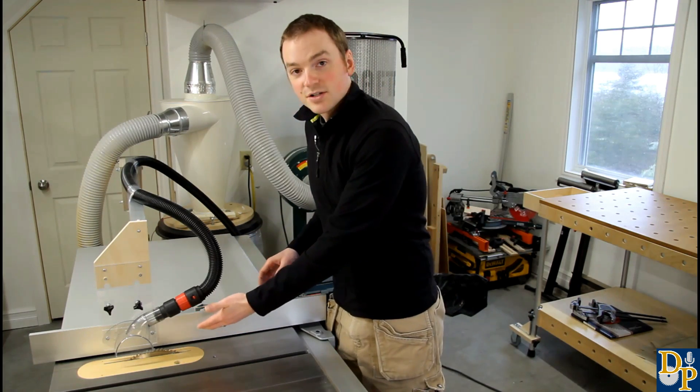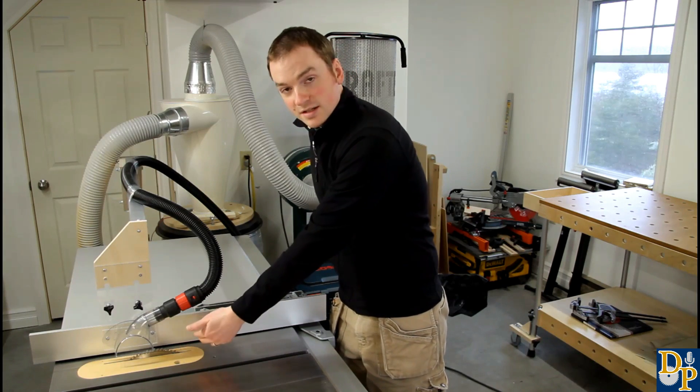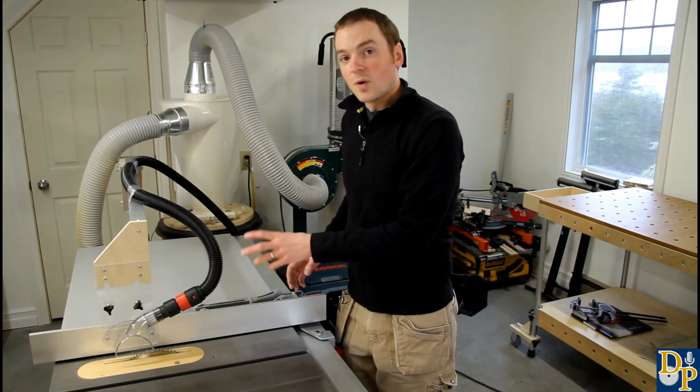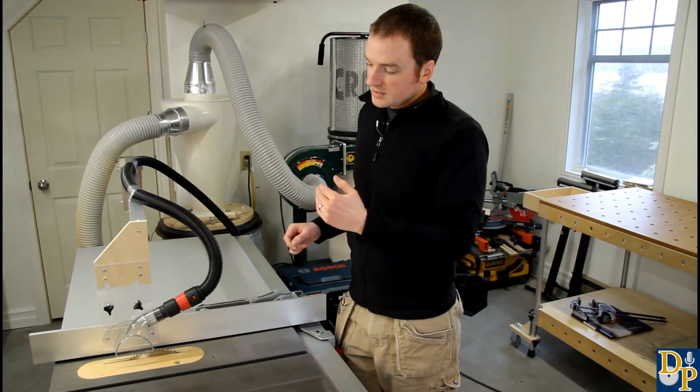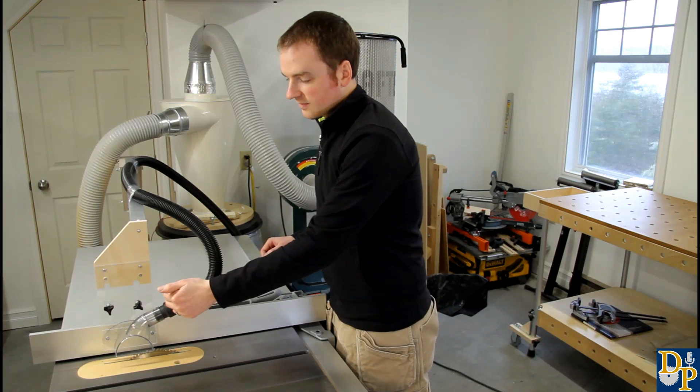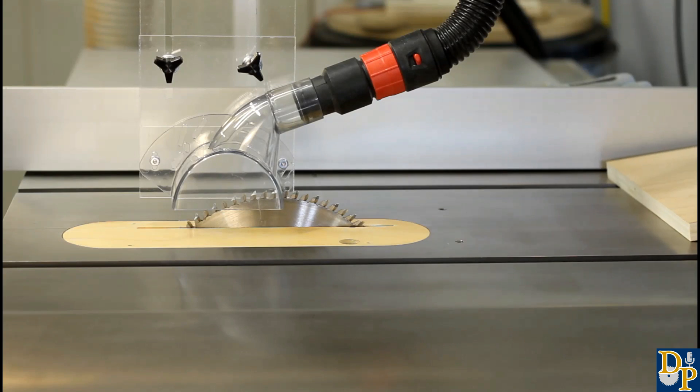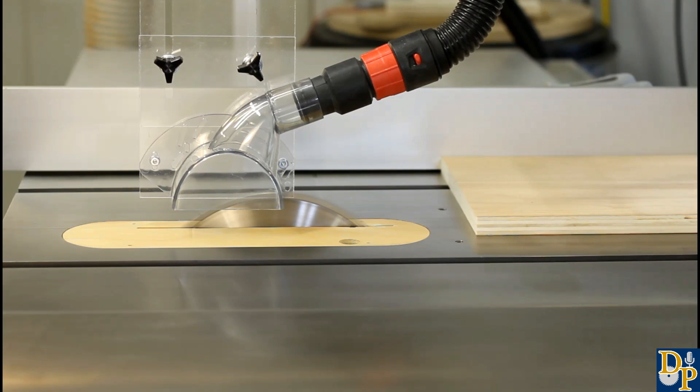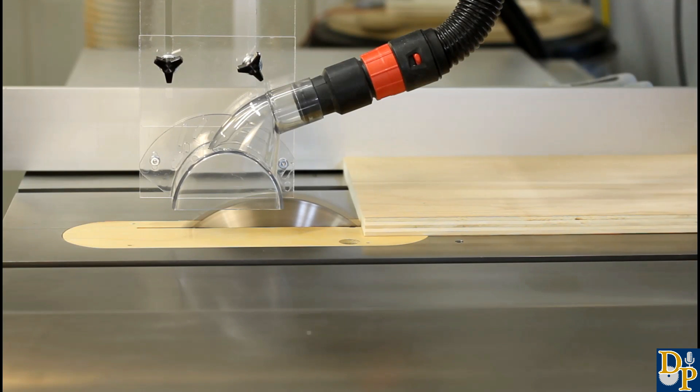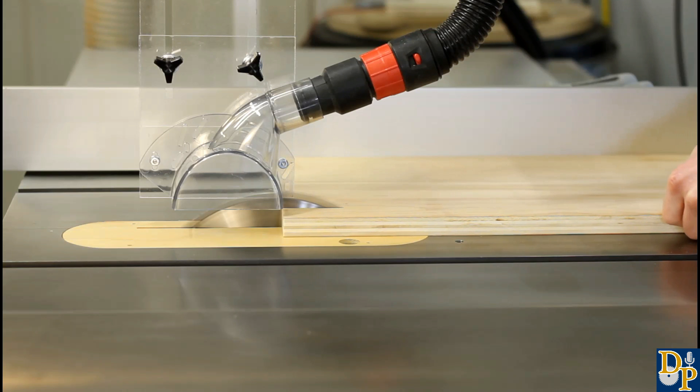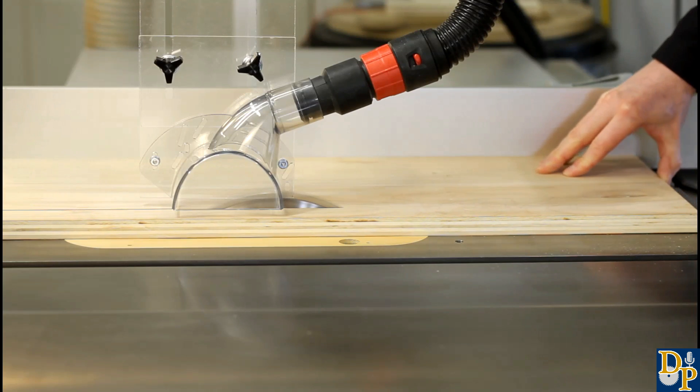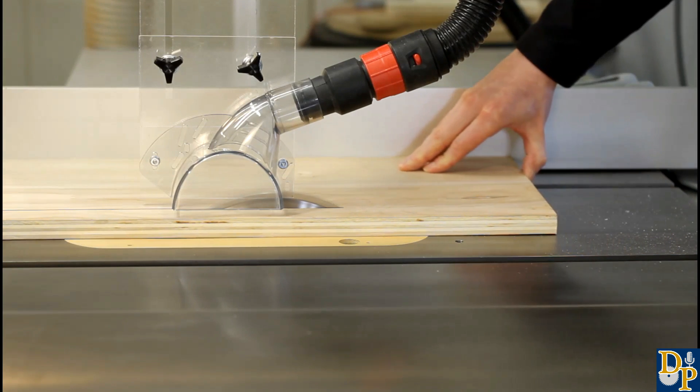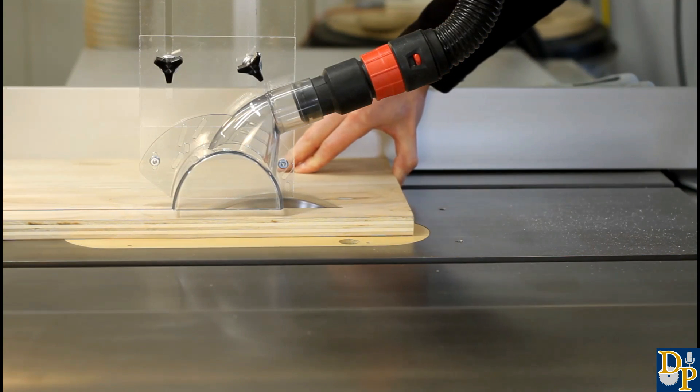Now as you can see, it doesn't function as a guard because the front of the blade is still exposed. But I'll show you why I did that in just a minute. Now I designed this so that the hose is on the front of the collector. And the reason behind that is I want, as the dust spits off the back of the blade and that curvature of the blade, I want it to have a direct path into the dust hose. So rather than having it on the back and having the dust have to change directions, it's got a direct line right through so it really improves the collection.